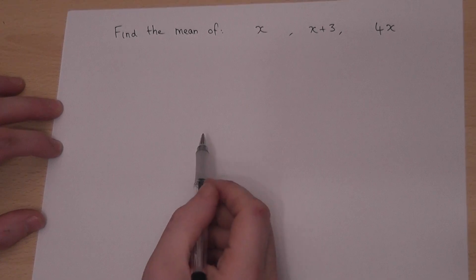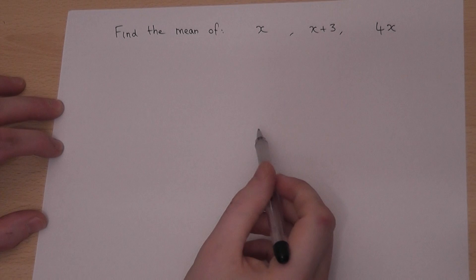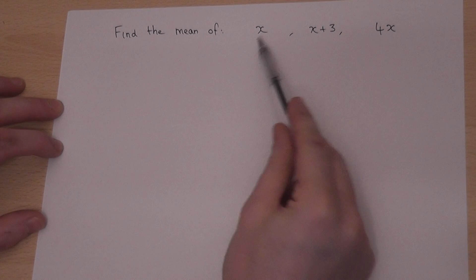This quick video looks at finding the mean of three algebraic expressions. Now we know that the mean just means add up and divide by the number of terms.